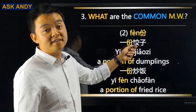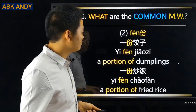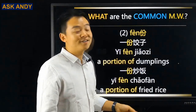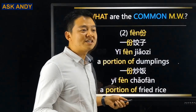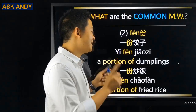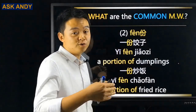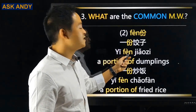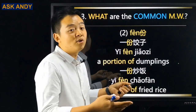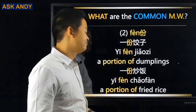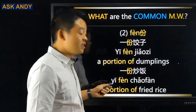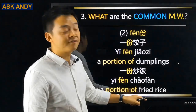Number two: 份. For example, 一份饺子 — a portion of dumplings. You won't ask for one dumpling, so you ask for a portion. This is a really important measure word for ordering food in a restaurant. Also 一份炒饭 — a portion of fried rice.